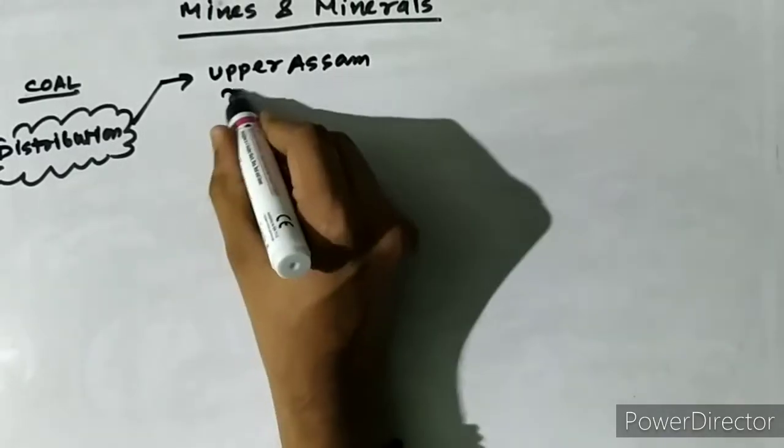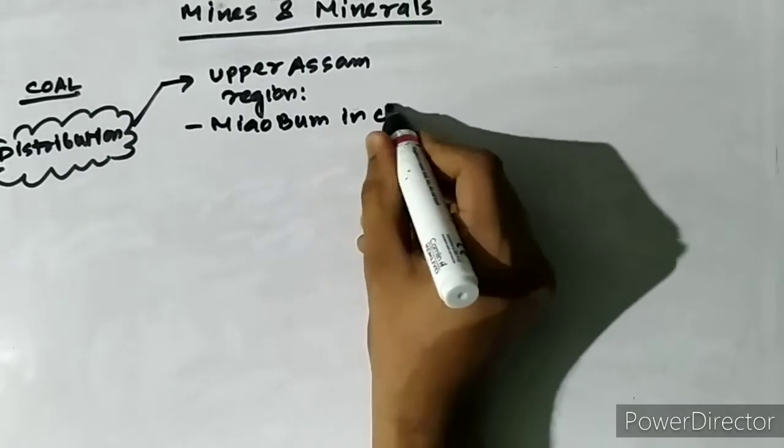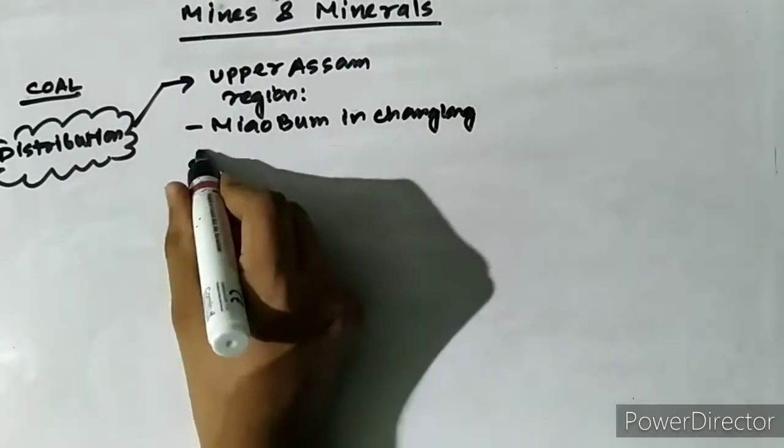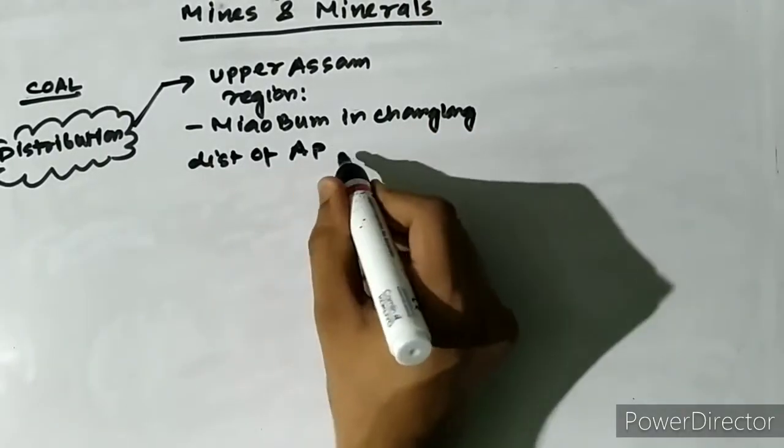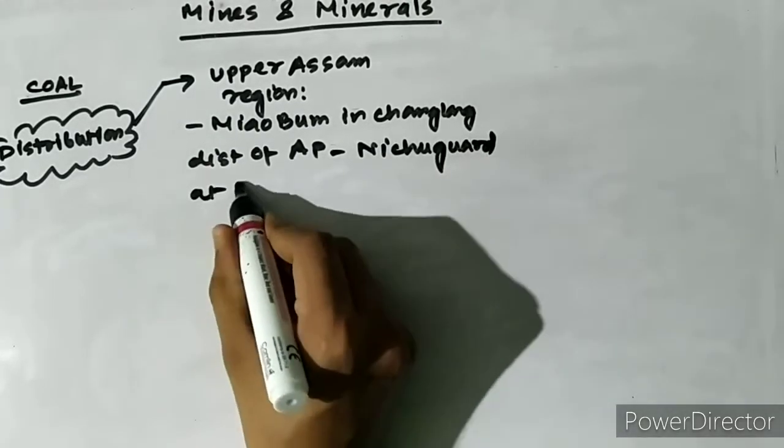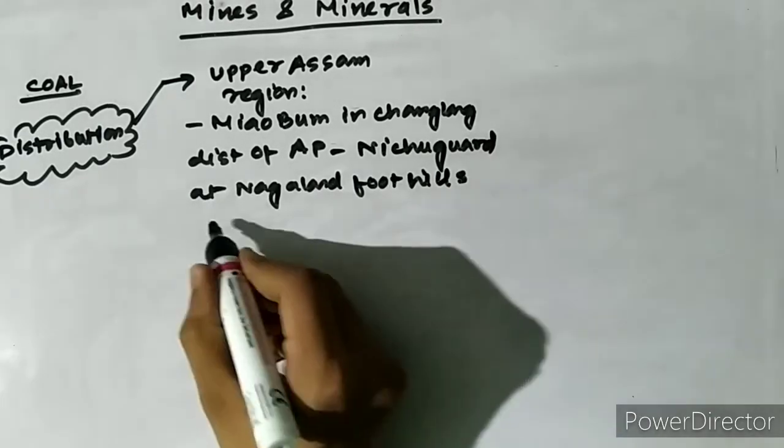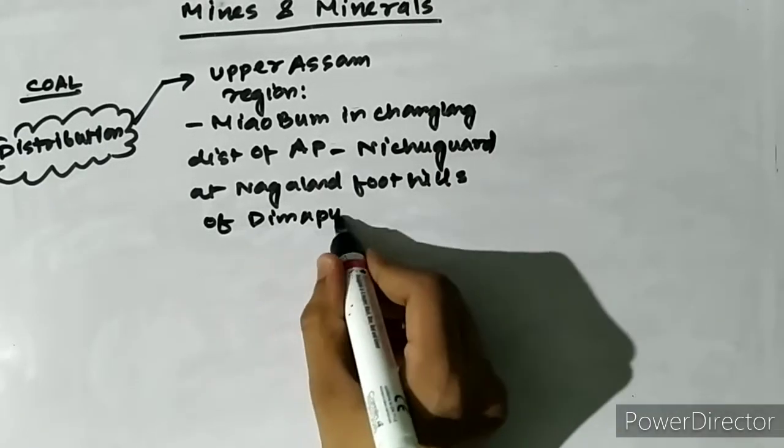The coal fields in Assam can be differentiated into two parts. The first part is the Upper Assam region. In Upper Assam, the coal occurs from Miaobam in Changlang district of Arunachal Pradesh to Nichugard at Nagaland foothills, which is south of Dimapur.